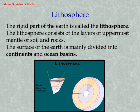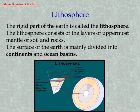Lithosphere. The rigid part of the Earth is called the lithosphere. The lithosphere consists of the layers of uppermost mantle of soil and rocks. The surface of the Earth is mainly divided into continents and ocean basins.